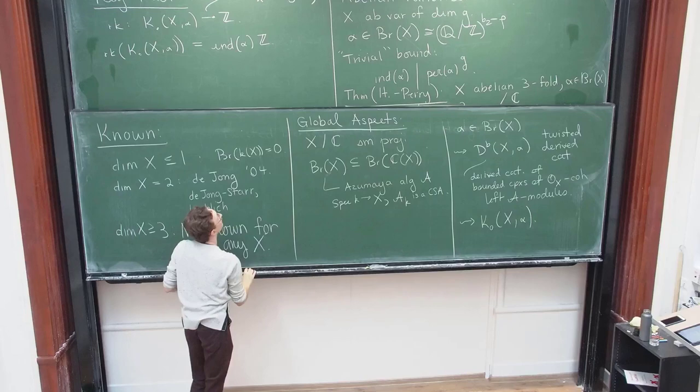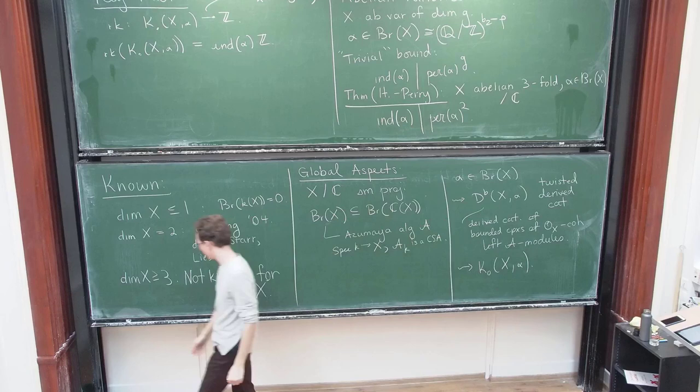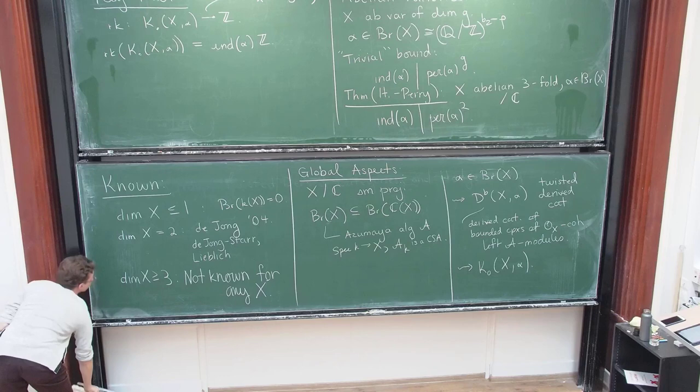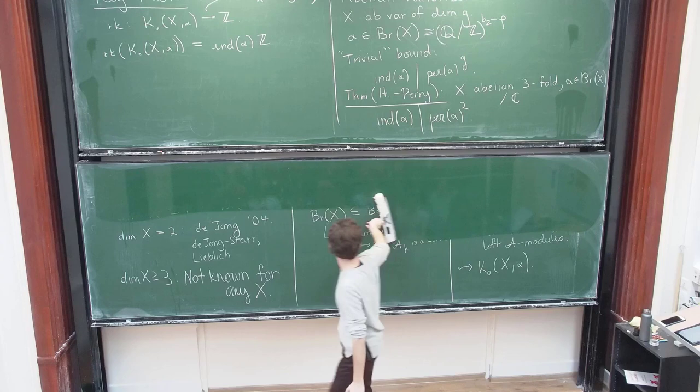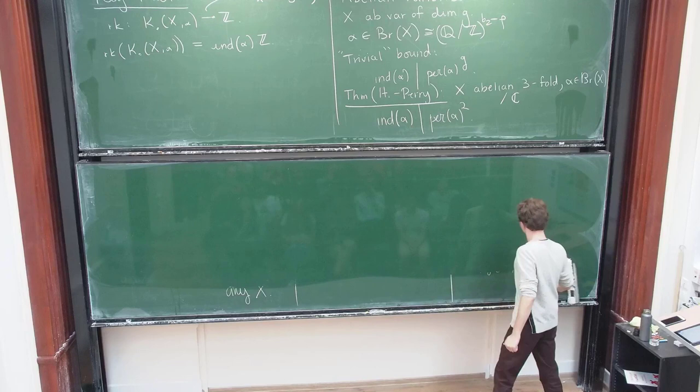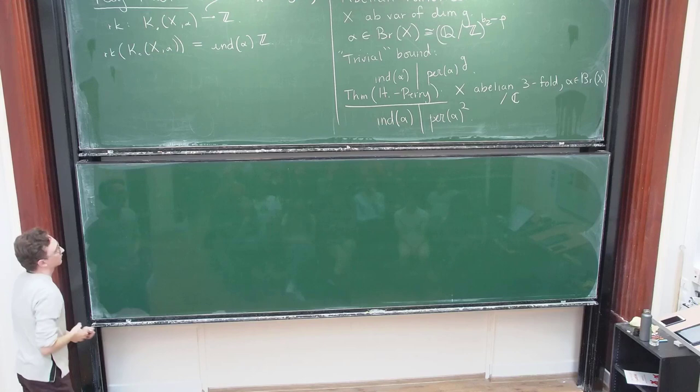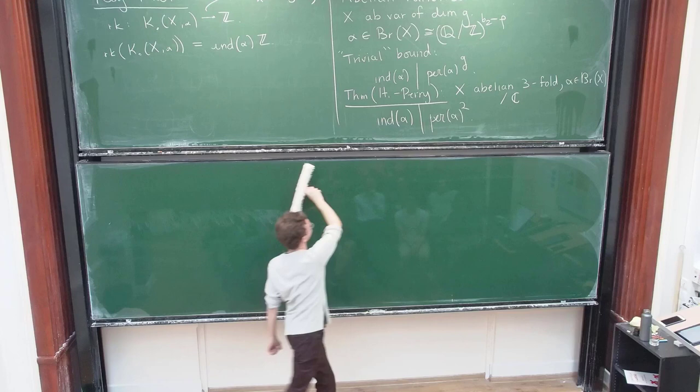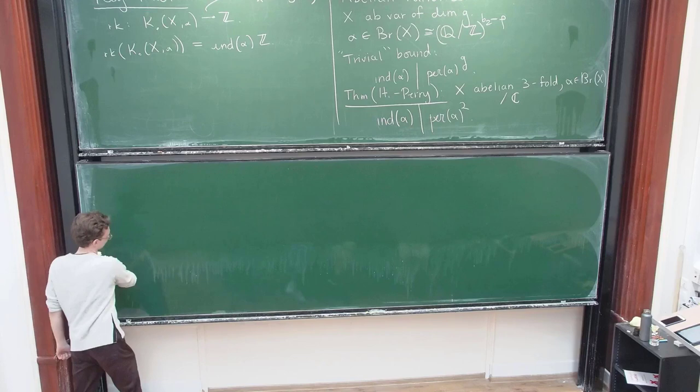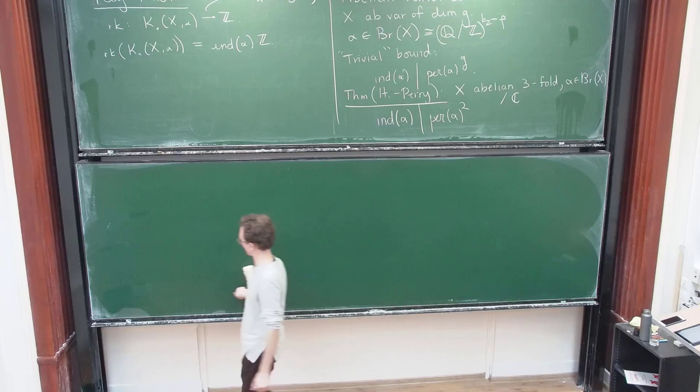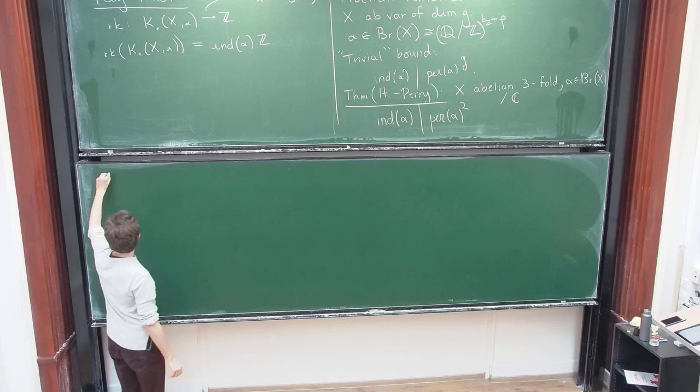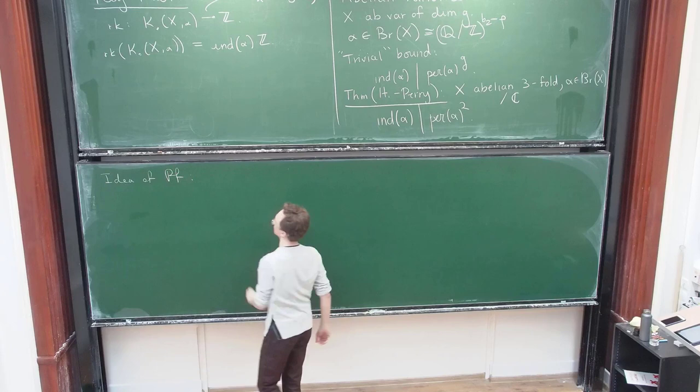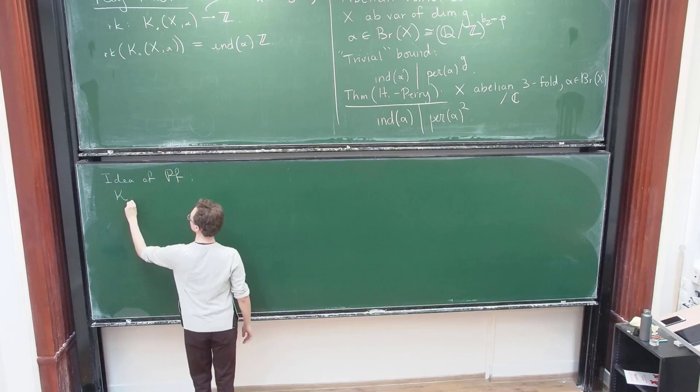So there are two steps in the proof. So let me say the idea of the proof, so there's sort of, so here's how it goes.